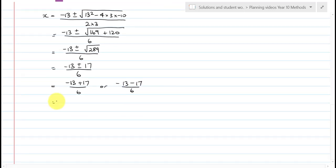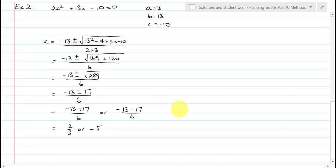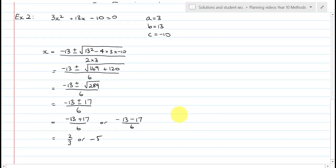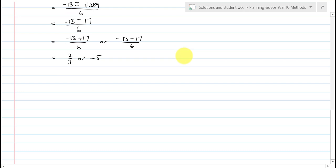And, simplifying these, in one go, negative 13, plus 17, is 4, over 6, which is 2 thirds. Negative 13, minus 17, is negative 30, over 6, which is negative 5. And so, there's our two answers. Two thirds, or negative 5. You see here, this has come up actually quite nice. And you could have factorized this using our non-monic factorization technique.